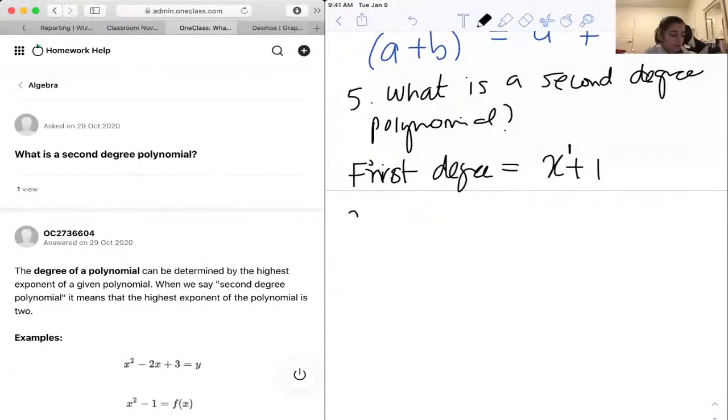Our second-degree would be something like x squared plus 1, because our exponent is 2. Our third-degree would be x cubed, or x to the power of 3, plus 1.